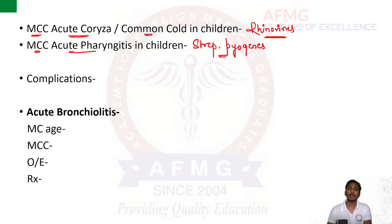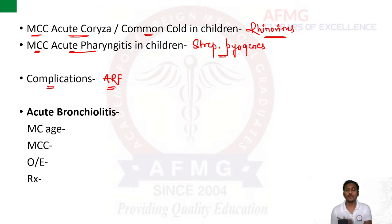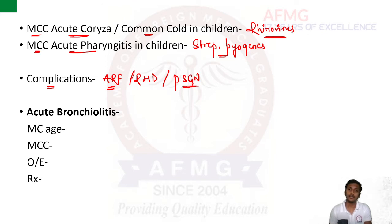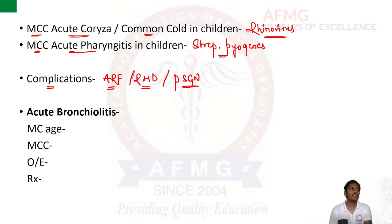One important complication of streptococcal pharyngitis is acute rheumatic fever. The body produces antibodies fighting against the M protein of Streptococcus pyogenes, but these antibodies also attack similar proteins in our myocardium, leading to rheumatic heart disease. The child can also suffer from PSGN — post-streptococcal glomerulonephritis — due to the mechanism of molecular mimicry or cross-reactivity.